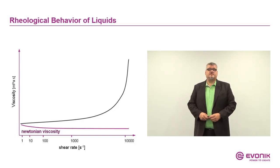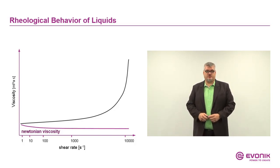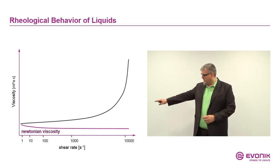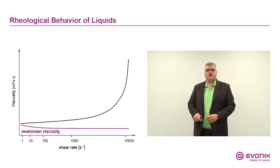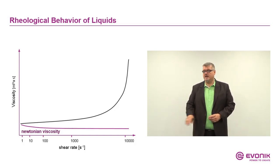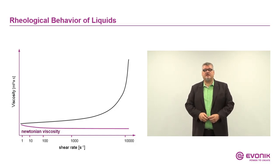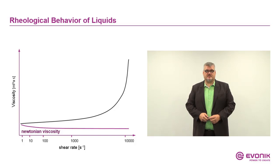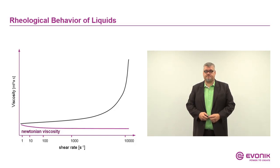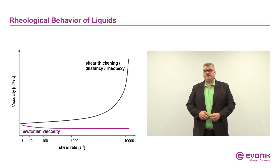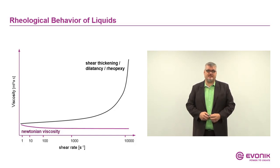This graph shows viscosity increasing with shear force. We start with rather low viscosity when low shear forces are applied, and the viscosity rises very steeply when higher shear forces are applied. This happens, for example, in the automatic gearbox of your car. This effect is called shear thickening, dilatancy, or rheopexy.